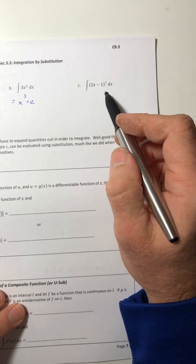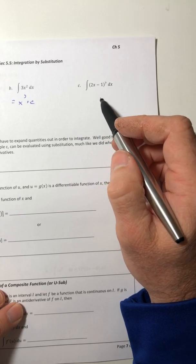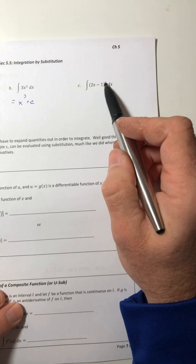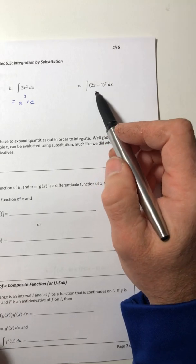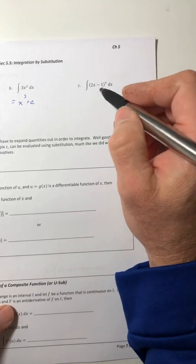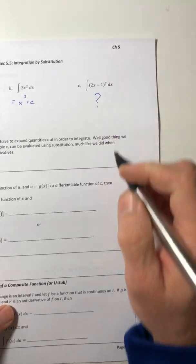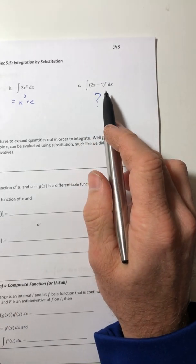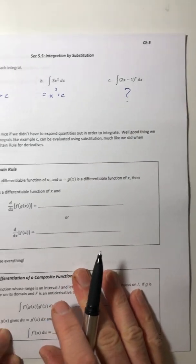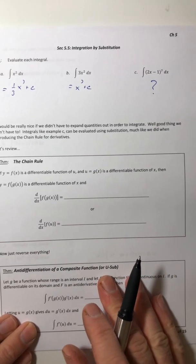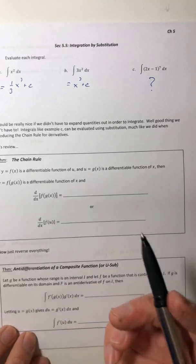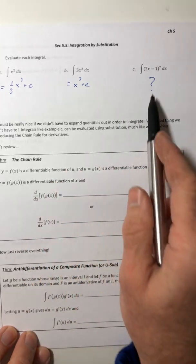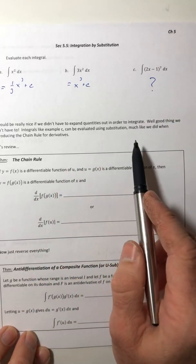Integrate 2x minus 1 to the seventh power. The only way we know how to do this is to expand that out. I really don't want to do that. So there has to be a better way than multiplying that thing out and then finding the integral. Well, there is a way that we don't have to expand this out.